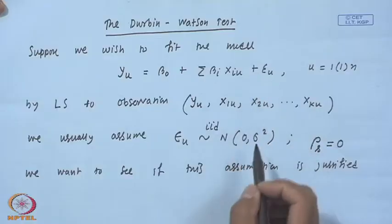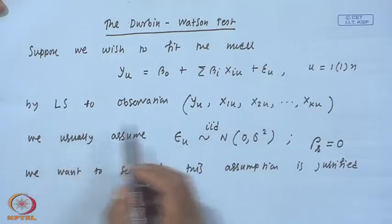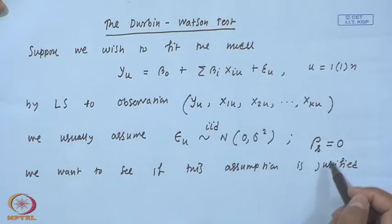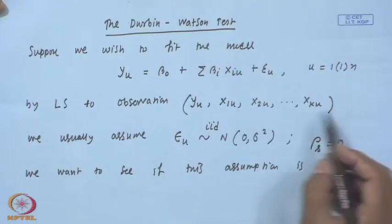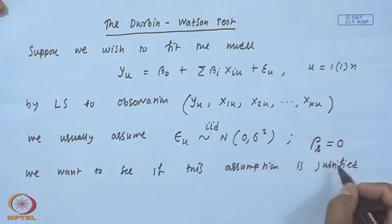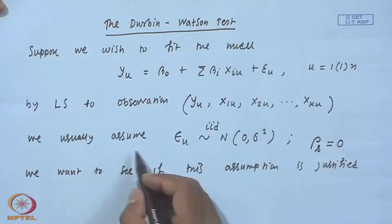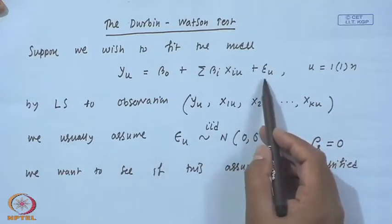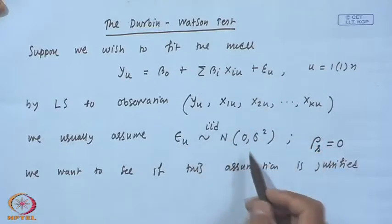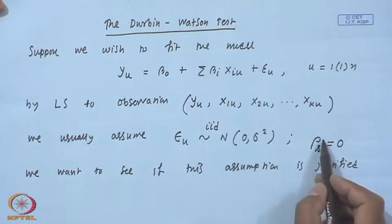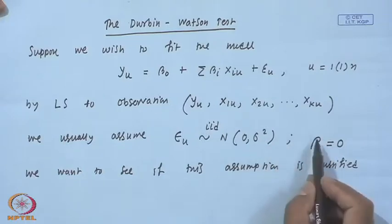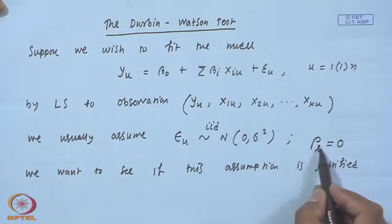Here is the slide from the previous class on the Durbin-Watson test. We want to fit a multiple linear regression model using the least square technique to observations that could be time series data, meaning observations taken sequentially in time. What we usually assume is that the error term epsilon follows a normal distribution with mean 0 and variance sigma square—that means we assume all correlations rho_s between errors s steps apart are equal to 0.